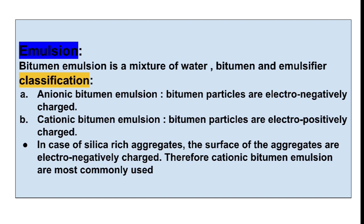Now let us come to emulsion. Bitumen emulsion is a mixture of water, bitumen and emulsifier. Generally, if we mix water and bitumen, they won't mix together, so we use an emulsifier as a medium to mix water and bitumen. Emulsion is classified as anionic bitumen emulsion and cationic bitumen emulsion.